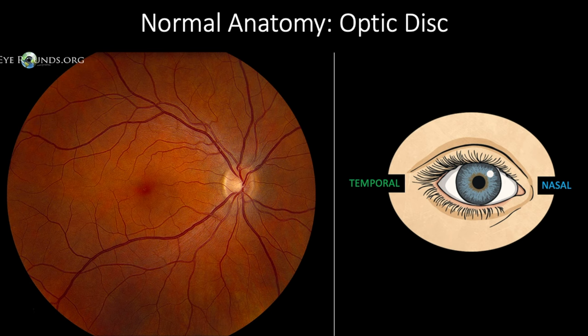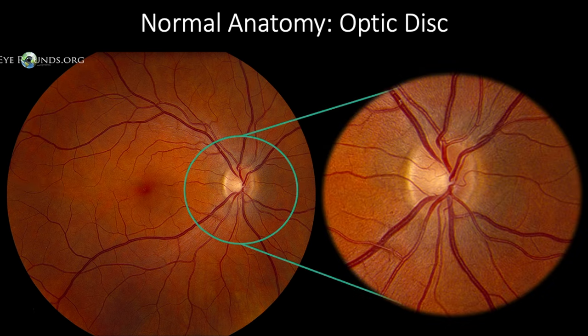Let's start with the optic disc. The optic disc is located nasally, thus by looking at the image provided we can establish that we are looking at the patient's right eye. When looking at the disc we should assess its color, contour, and sharpness. The disc should be pale pink, approximately 1.5 millimeters in diameter, with sharp and flat margins.